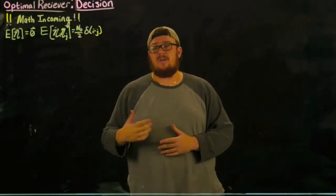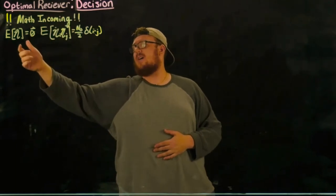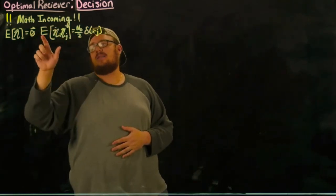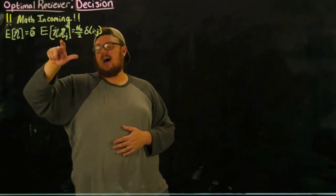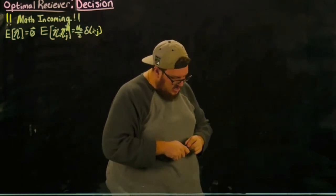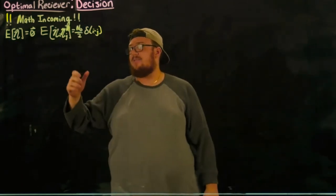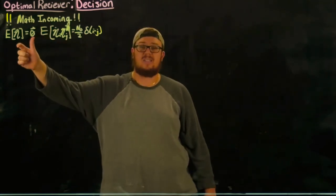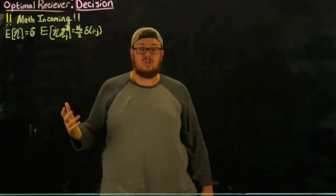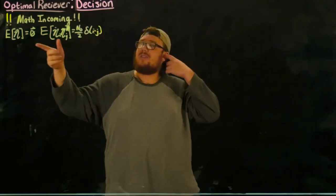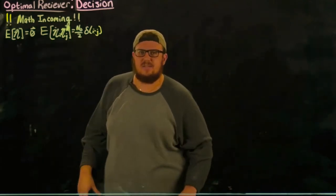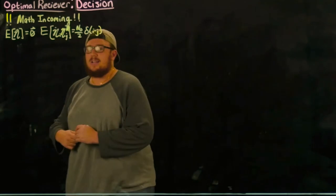In the previous video I showed that the expectation of the random component of our received vector is zero, and the expectation of a_i times a_j conjugate is N₀/2 · δ(i−j). This means the variance, or the power of the noise of each component of the noise vector, is equal to the power of the original noise. Also, all of these random variables inside this vector are independent, which was not obvious from the formulations.